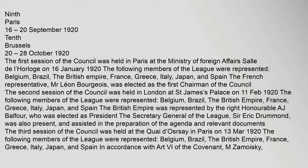The second session of the Council was held in London at St. James's Palace on 11 February 1920. The following members were represented: Belgium, Brazil, the British Empire, France, Greece, Italy, Japan, and Spain. The British Empire was represented by the Right Honourable A.J. Balfour, who was elected as President. The Secretary-General of the League, Sir Eric Drummond, was also present and assisted in the preparation of the agenda and relevant documents.